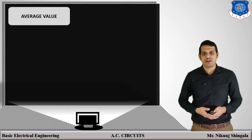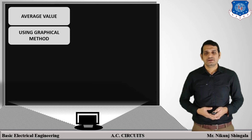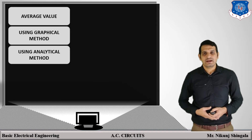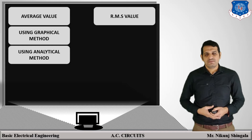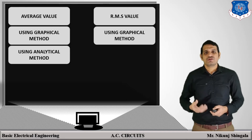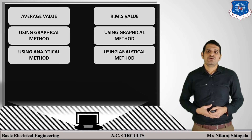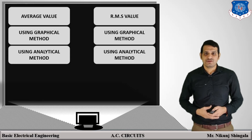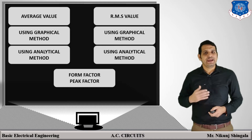The first one is average value, then determination of average value using graphical method, then determination of average value using analytical method, then another term that is RMS value, determination of RMS value using graphical method and determination of RMS value using analytical method. These are the two important terms I am going to discuss, and finally two factors: form factor and peak factor.